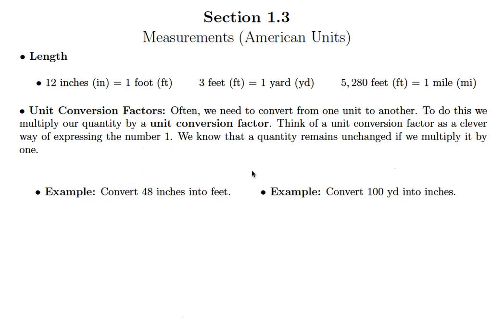So we're given three different equivalencies here that we can work with. We have 12 inches equals 1 foot, 3 feet equals 1 yard, and 5,280 feet equals 1 mile. Now the tool that we're going to use to make these conversions happen is that of a unit conversion factor. The way to think of a unit conversion factor is that we are going to take our number, in the first example here we're talking about 48 inches, and we're going to multiply by something, but that something, this unit conversion factor, must equal 1.